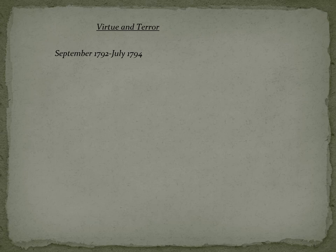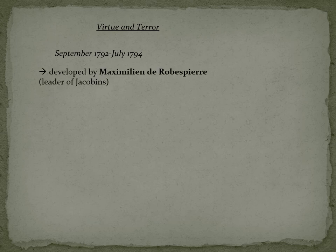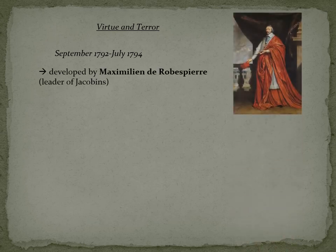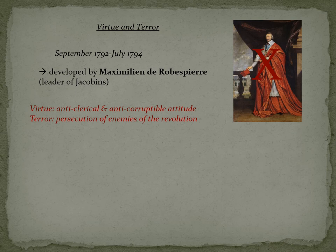From September 1792 to July 1794, the Jacobins established a kind of military dictatorship according to the formula of virtue and terror. This concept was developed by Maximilien de Robespierre. Virtue was an anti-clerical and anti-corruptible attitude; terror referred to the persecution of the opponents of the revolution.